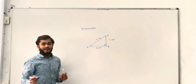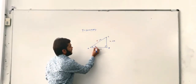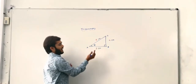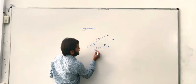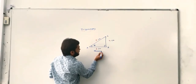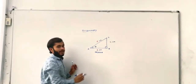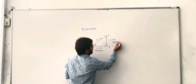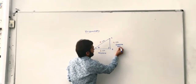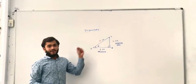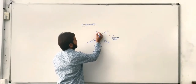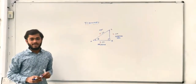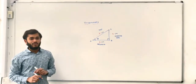If we consider the angle at A, that means angle A is theta. So the AB side with respect to angle theta is known as the adjacent side. The BC side with respect to angle theta is known as the opposite side. And the AC side with respect to angle theta is known as the hypotenuse — that means the longest side in the triangle is known as the hypotenuse.